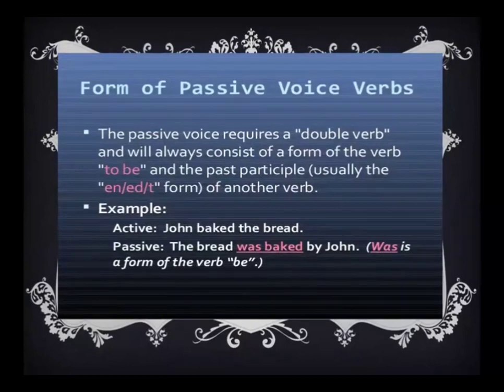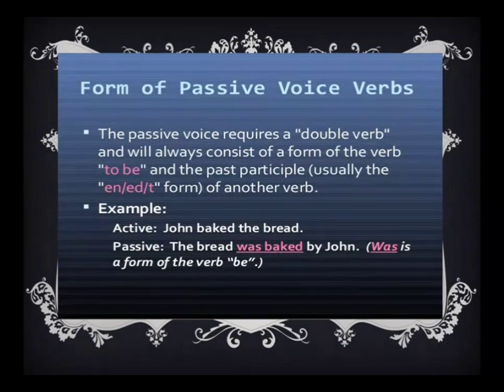The form of the passive voice verbs: the passive voice requires a double verb and will always consist of a form of the verb 'to be' and the past participle of another verb. Past participle means the third form of the verb. Mark this point in your mind — we always use the verb's third form in the whole active and passive session. No first form, no second form, no -ing form should be used in your conversion of sentences from active to passive.